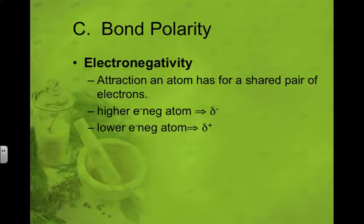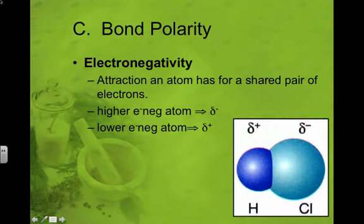So remember electronegativity is the attraction that an atom has to attract the electrons to itself. So if it is able to pull the electrons more towards itself, it's more electronegative when it's bonding. So the higher electronegative atom, because the electrons are more attracted to it, it's going to have a partial negative end, which you can see with this sign right here.